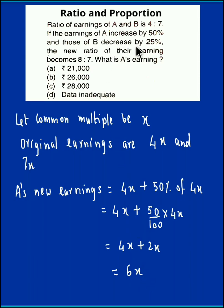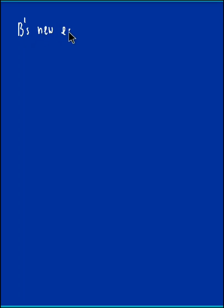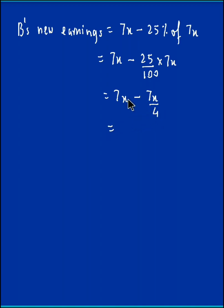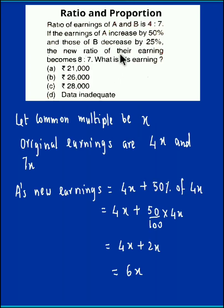And B's earnings decrease by 25 percent. The original earning for B was 7x, so B's new earnings would be 7x minus 25 percent of 7x, which is 7x minus 7x/4. Equalizing the denominator: 28x/4 minus 7x/4, that becomes 21x/4.